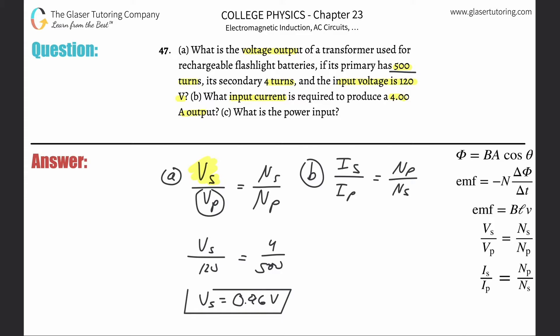So what is the input current? We need to know the, this is what we're solving for, right? The primary current. So we need to know the secondary current. Oh, look, they told us the output, that's the secondary, that's a four, right? So four over Ip equals that number of turns in the primary. They told that to us, that's 500. Number of turns in the secondary, they told us that is going to be four, and just go about our business.